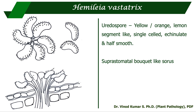Hemileia vastatrix causes coffee rust. The uredospores are yellow or orange in color, lemon-segment-shaped, single-celled, and half echinulate — meaning only one half of the spore is echinulate and the other half is smooth. These uredospores emerge through stomata on the lower surface of the leaf, and when observed under a stereoscope they appear as suprastomatal bokeh-like sori, which is the most striking feature of this pathogen.